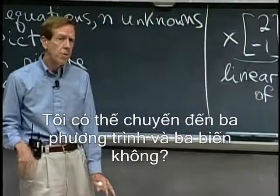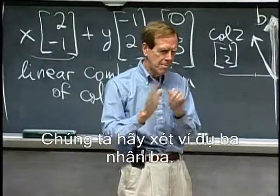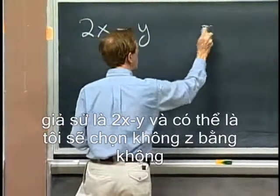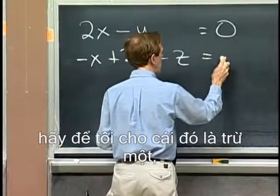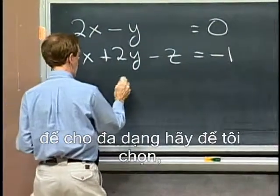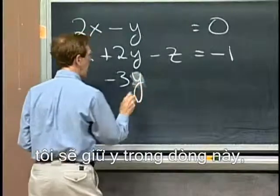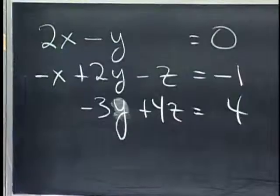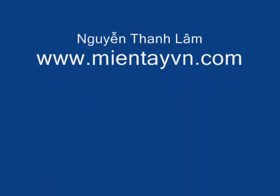Can I move to three equations and three unknowns? It's easy to picture the two-by-two case; let me do a three-by-three example. I'll start it the same way: say maybe 2x minus y and maybe no z's equals zero, and maybe minus x plus 2y minus z equals minus one, and just for variety, minus 3y plus 4z equals four. That's three equations — I'm in three dimensions, x, y, z — and I don't have a solution yet.